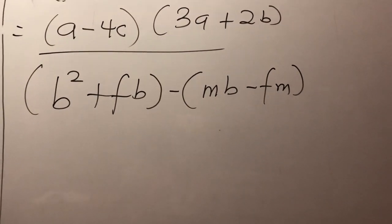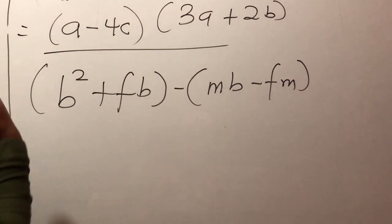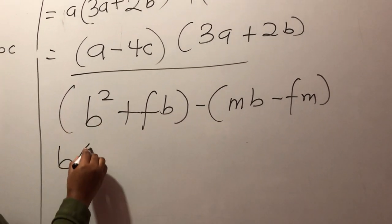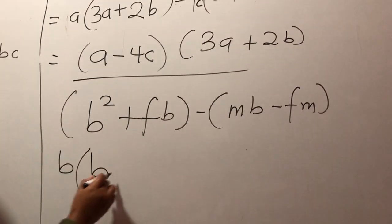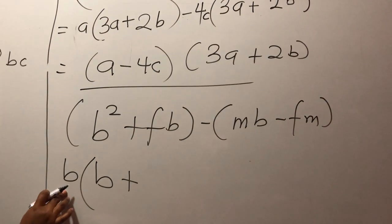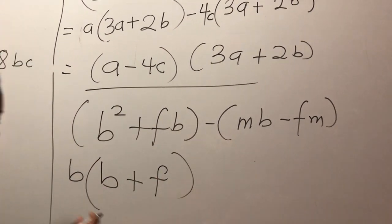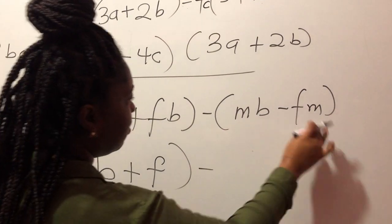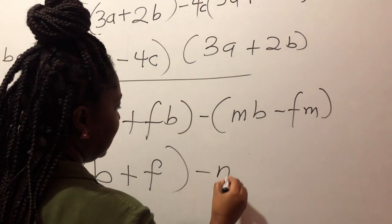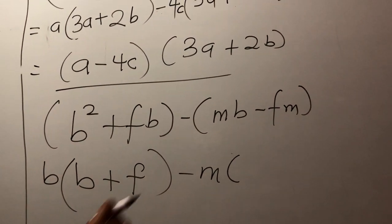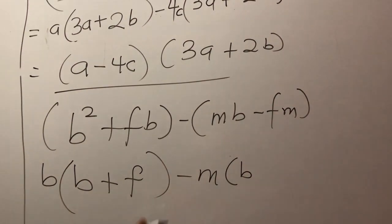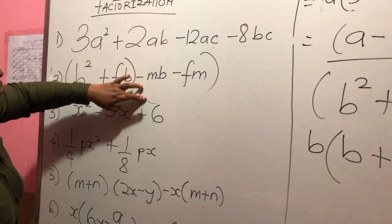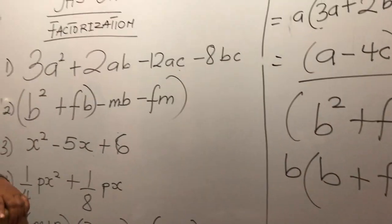What is your common factor here? One — obviously — but I don't write my one. I bring my B out. I take one B out of here; what am I left with? Another B. B times B gives me B squared. Plus F times B — so this B takes out this B here, you are left with F. So we have B squared and BF. We bring our minus. What is our common factor here? M. So I bring my M here. My negative M times my B gives me negative MB, just as it is in the question.